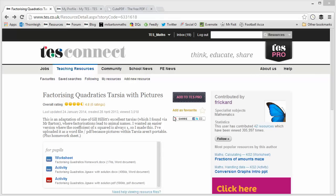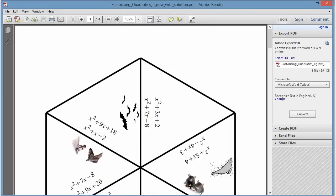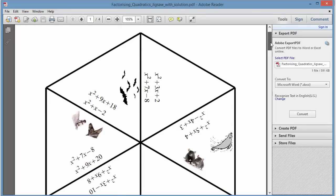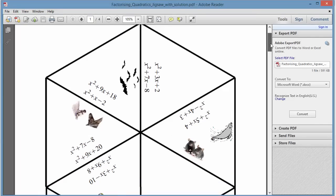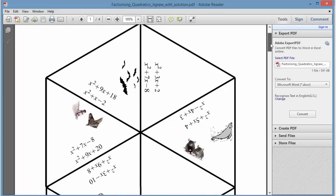Well, Frickard's come up with the answer here. He's created a Tarsia jigsaw on factorising quadratics that has these pictures in it. I'll just talk you through the activity itself first and then we'll have a look at how we can actually do this ourselves.